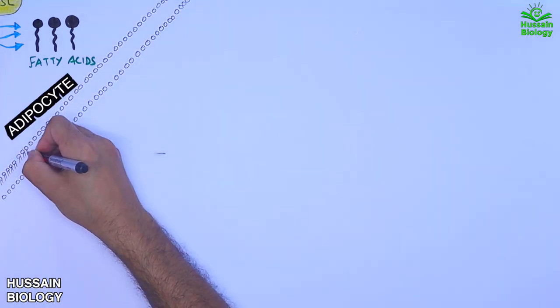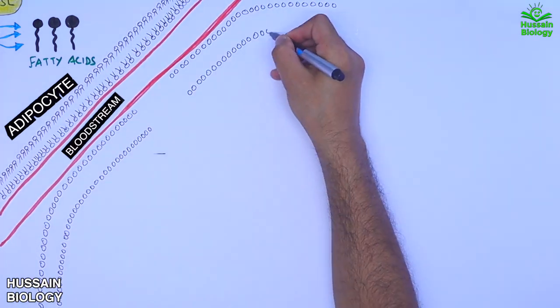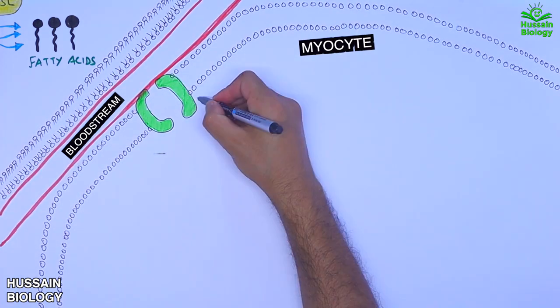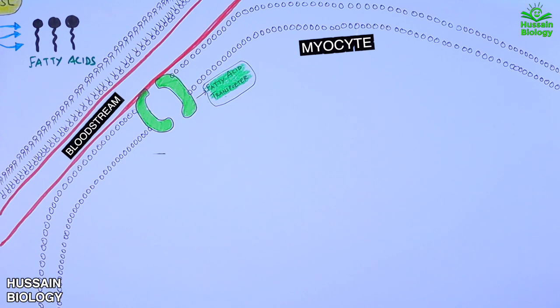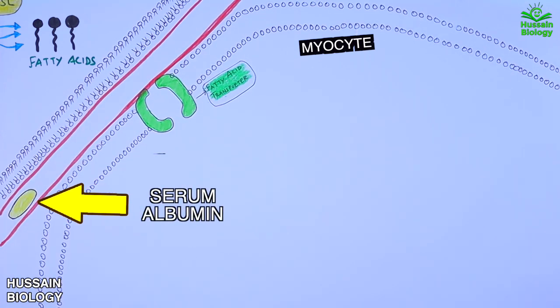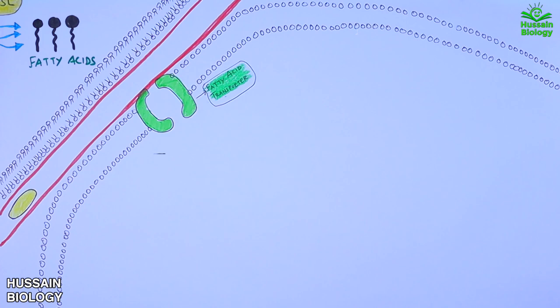Here we see these fatty acids are in the adipocyte, this is our bloodstream, and on the right we have the myocyte cell which has a fatty acid transporter as shown in the diagram. Also within the bloodstream we have serum albumin. Now let's start the mobilization part.